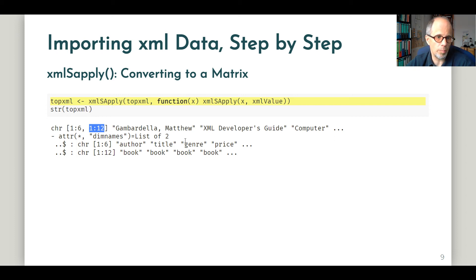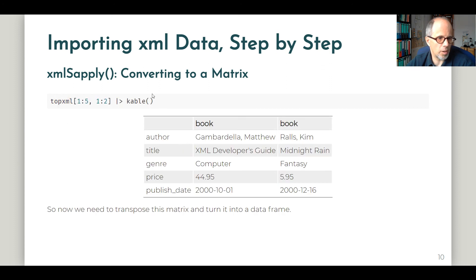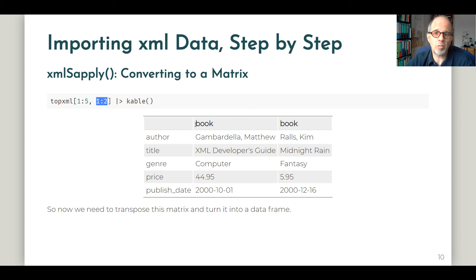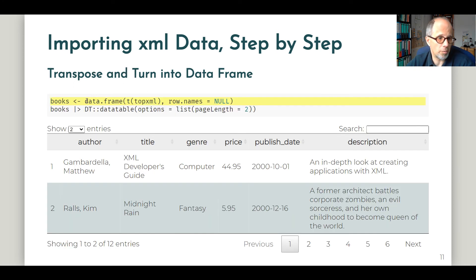Let's look at this a bit more closely. I'm using the `kable` function here to display it in HTML format, using the first five rows — I excluded the description which is a little verbose — and limiting to the first two columns. So each column corresponds to a book. Now we have a matrix, which is more convenient to work with than the nested list, but it's still not a data frame. So as a last step, we need to transpose this matrix so that the rows turn into columns and vice versa, and then transform it into a data frame. We're doing this in plain base R code, combining the `data.frame` function and the `t` function for transpose. We get the books data frame back that looks just the same as the first data frame we saw when we used the one-liner convenience function.